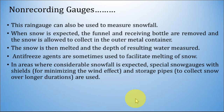Non-recording type rain gauges can also be used to measure snowfall. When snow is expected, the funnel and receiving bottle are removed and snow is allowed to collect in the outer metal container. The snow is then melted and the depth of resulting water is measured. Anti-freeze agents are sometimes used to facilitate melting of snow. In areas where considerable snowfall is expected, special snow gauges with shields for minimizing wind effect and storage pipes to collect snow over long durations are used.